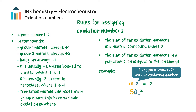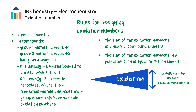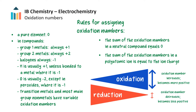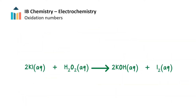The oxidation number increases during oxidation — it becomes more positive or less negative. The oxidation number decreases during reduction — becoming less positive or more negative. Let's use these rules to identify which species is oxidized and which is reduced in this reaction.